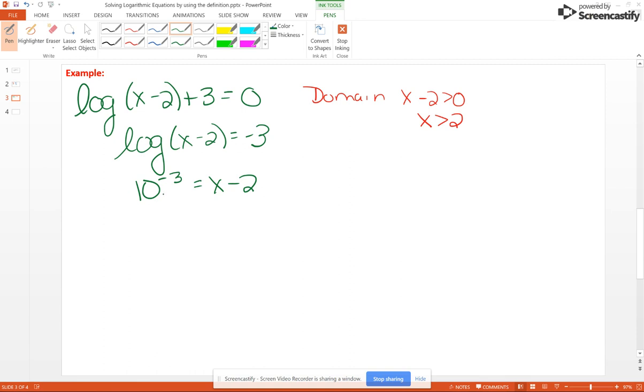Don't change this to a decimal yet. Let's add 2 to both sides. So we get 10 to the negative 3 plus 2, and so x is equal to 2.001, which is bigger than 2. So we check out with our domain.